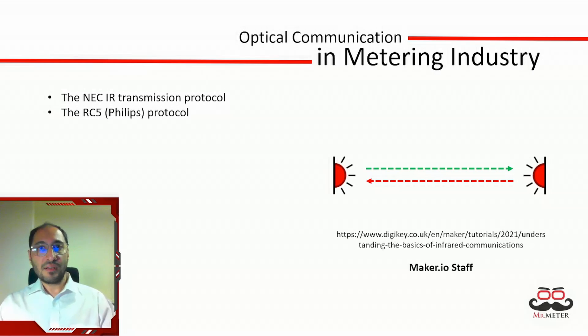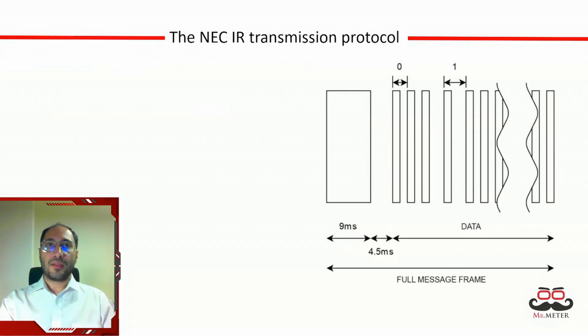I will be explaining these two protocols based on the article available on the link you see on the screen from DigiKey website by a maker.io staff. The NEC IR protocol uses a technique called pulse distance coding to differentiate the two logic states. What you see in the picture on the right is the basic demonstration of NEC IR protocol pulses of different lengths that define the basic two logical states, one will be low and one will be high.